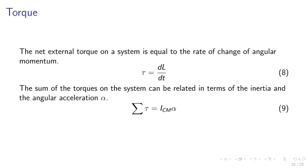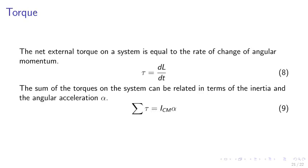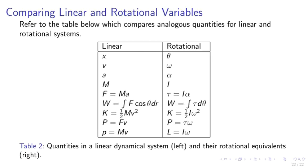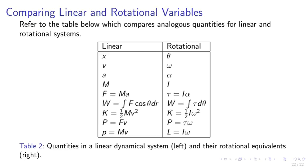The net external torque on a system equals the rate of change of angular momentum: tau equals dL over dt. The sum of torques relates to inertia and angular acceleration alpha: sigma tau equals I_CM alpha. This is completely analogous to sigma F equals MA. Comparing linear and rotational variables: x is analogous to theta, v to omega, a to alpha, m to moment of inertia I, F equals MA to torque equals I alpha, and K equals half mv squared to K equals half I omega squared.